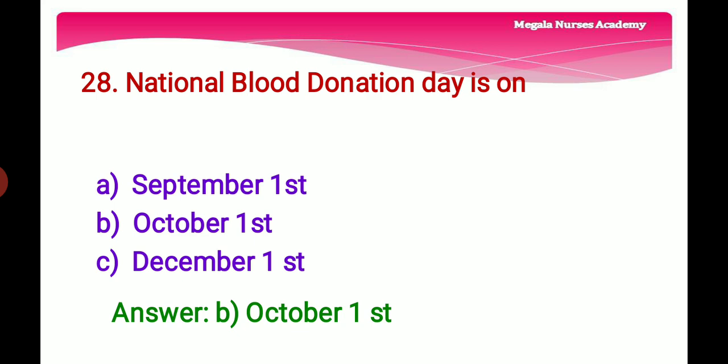Twenty-eighth question: National Blood Donation Day is on — Option A: September 1st, Option B: October 1st, Option C: December 1st. The right answer is Option B, October 1st, because every year National Voluntary Blood Donation Day is observed in India on 1st October since 1975 to encourage healthy people to donate blood.